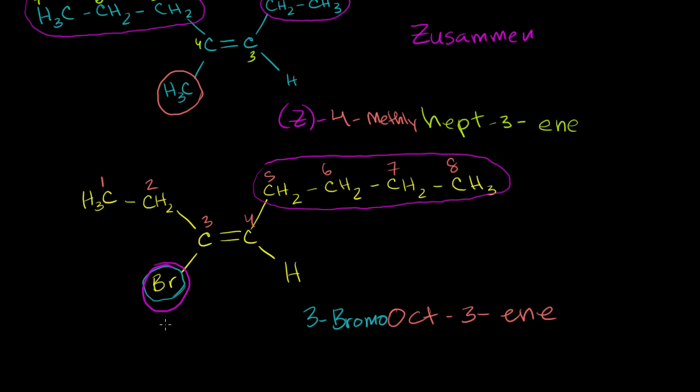So now, if we're deciding whether it's Entgegen or Zusammen, we see that our higher priority groups are apart. They're on opposite sides of the double bond. This one is on top. This one is below. We are apart. So this is Entgegen, or we would write E. This is E-3-bromo-oct-3-ene. And E is for, just as a bit of a refresher, it's for Entgegen, a word that I enjoy saying. Entgegen. There you go.